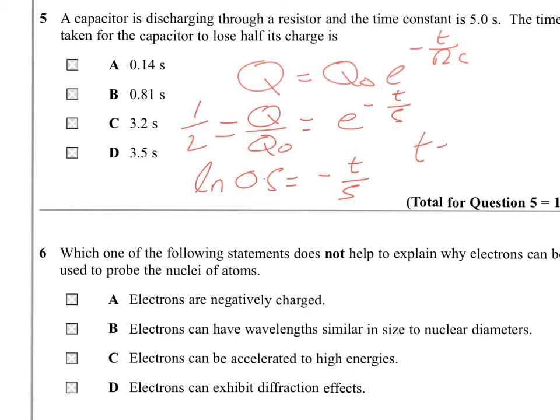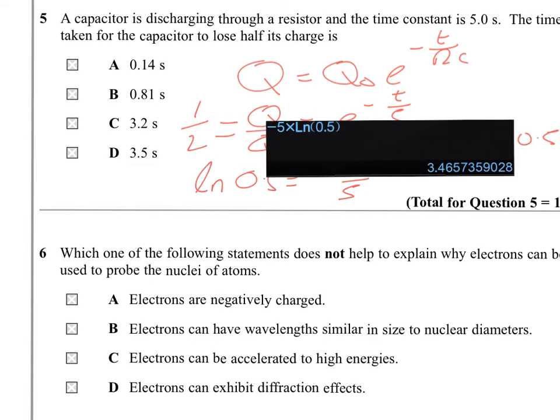So T is going to be equal to 5, times the LN of 0.5. And I'm getting this, so not there, D.